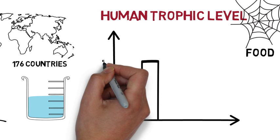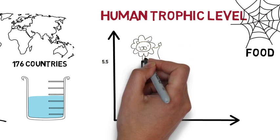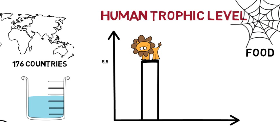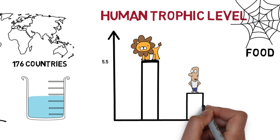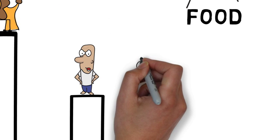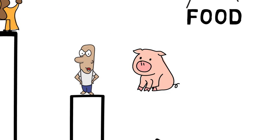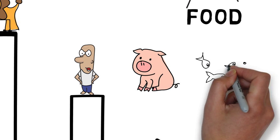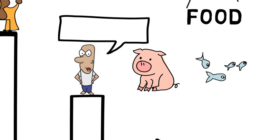Apex predators, like a lion, can sit as high as 5.5, but humans, we sit around 2.2, and that's comparable to pigs and anchovies. Look out predators, here we come.